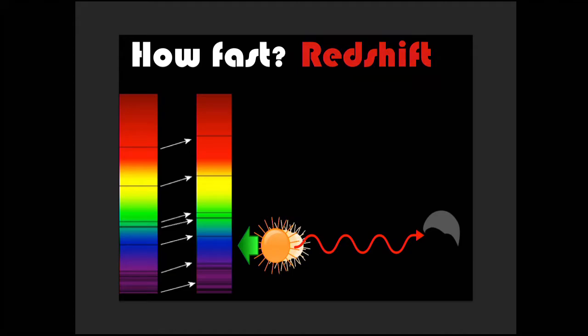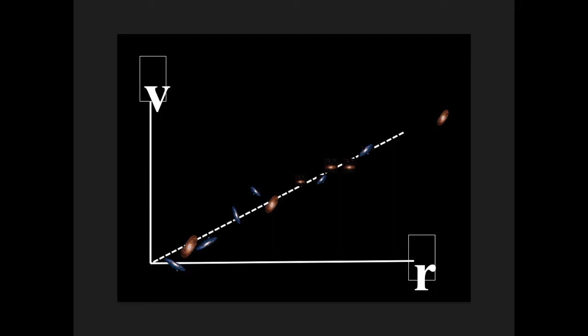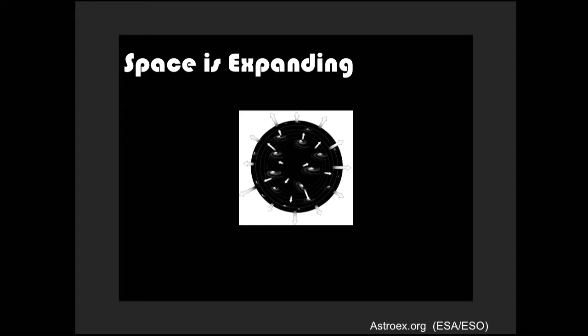What we've known for almost a hundred years is that the farther away something is, the faster it's moving away from us. So once we go away from the nearest objects, the sun isn't moving away from us, our galaxy isn't moving away. But once we go to more distant objects, the farther away they are, the faster they're moving. And that actually forms a straight line called Hubble's law.